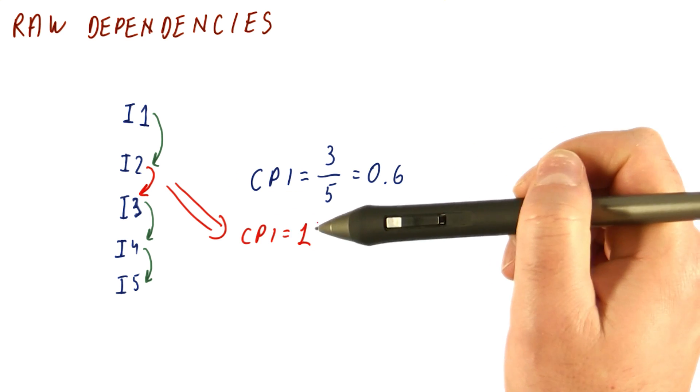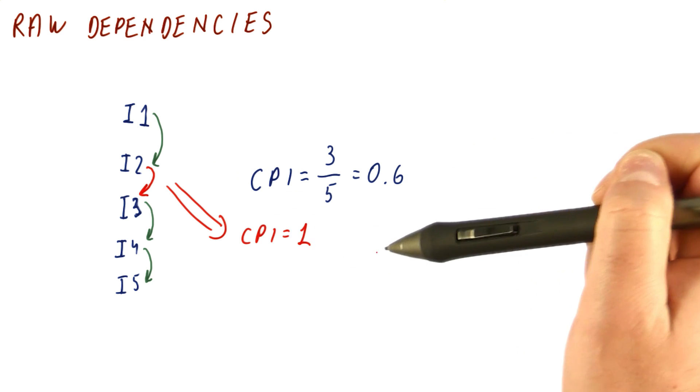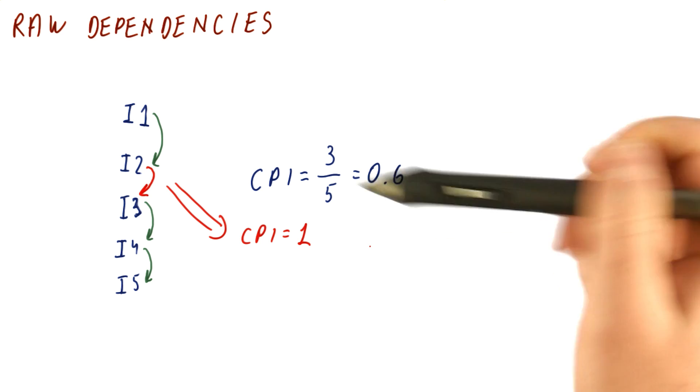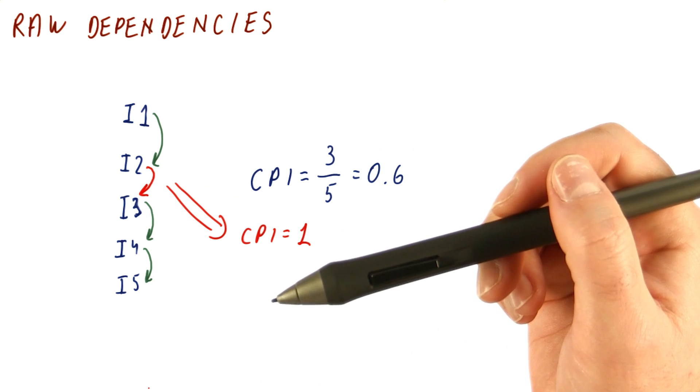We still have a CPI that is somewhere between one and zero. You would have a CPI of zero if you have a very large number of instructions with no dependencies. We have seen that.